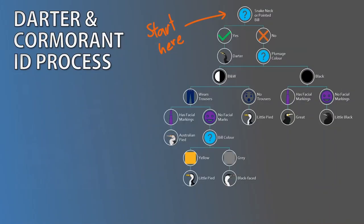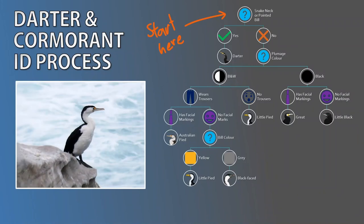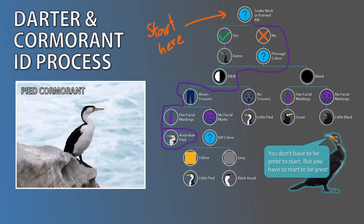Those attributes feed into a decision tree so you can step through them methodically. Let's walk through it using an example bird. First, rule out whether it's a darter — does it have a snake-like neck or a pointed rather than hooked bill? This one's bill looks hooked. Next, is the plumage black and white or just black? Ours is black and white. Does it wear trousers? Yes. Is it wearing makeup? Yes. So we have the Australian pied cormorant. Note that handy shortcuts exist — for example, if you spot a cormorant with a yellow hooked bill, it's a little pied — no further work required.